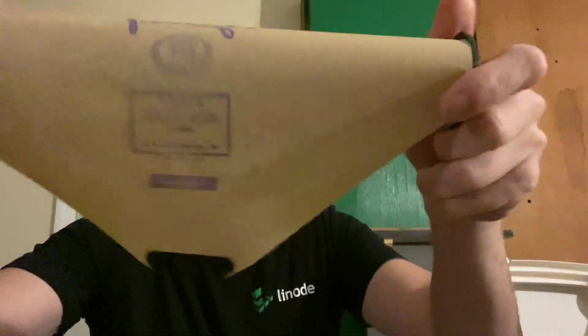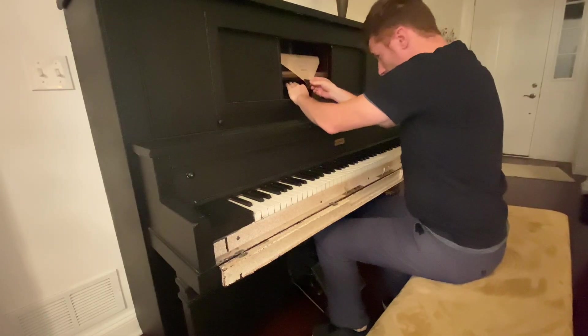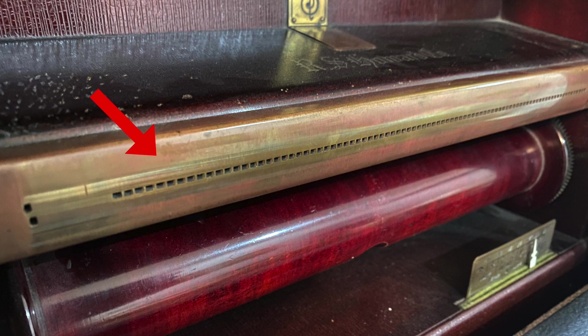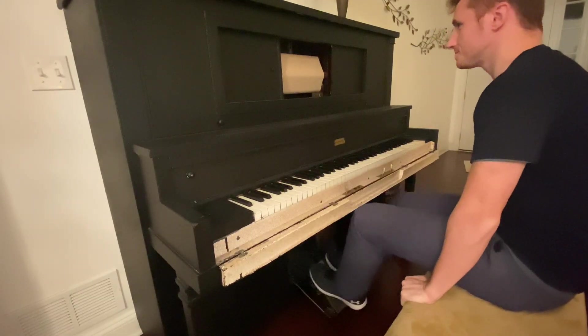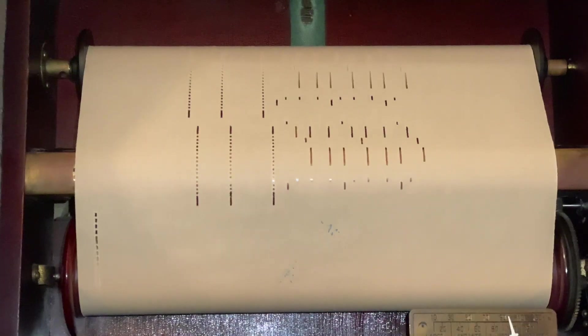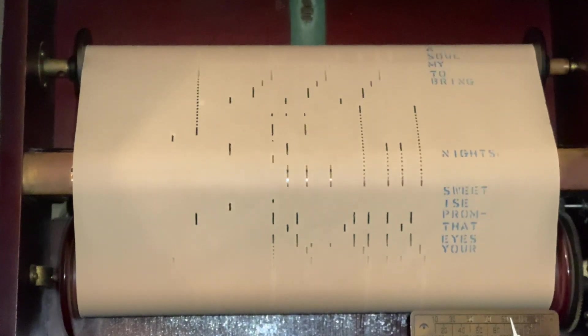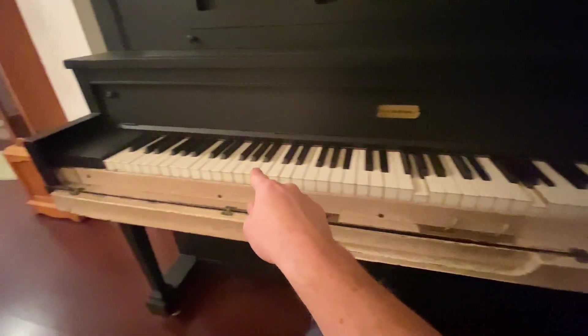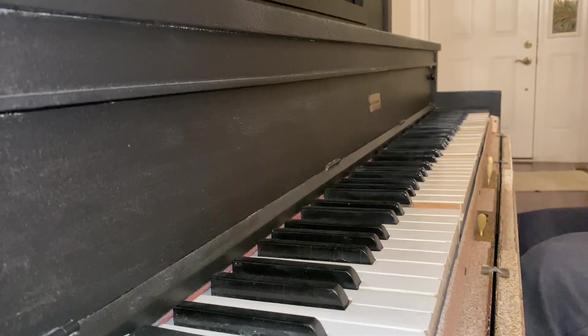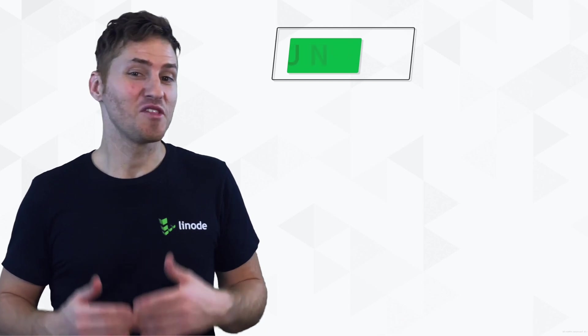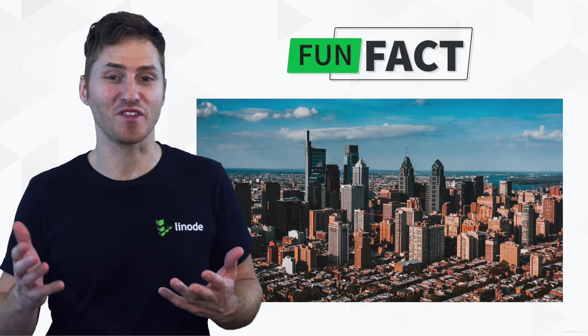Here you'll see this old piano roll, and as I unroll it, you'll notice that it has these little holes inside the paper. Air compression is actually read manually through the piano and it creates notes. I want to play for you right now and show you how punch cards work. And a fun fact — the first storage mechanism was created in Philadelphia.